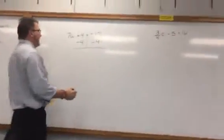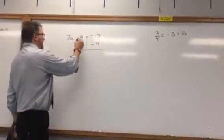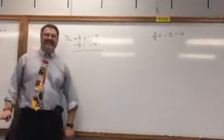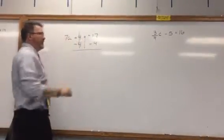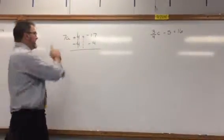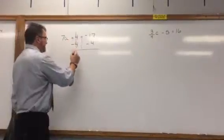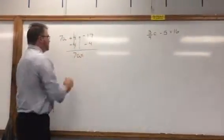And now, 4 minus 4, those are inverses. They cancel each other out. That's because 4 minus 4 is zero. And 7A plus zero is just 7A.